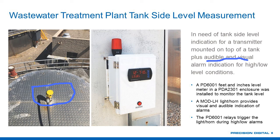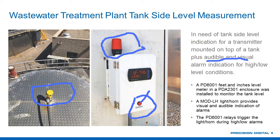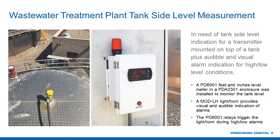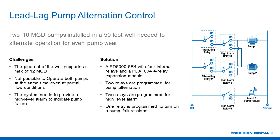We started selling these horn and light units a little over two years ago and they sold extremely well. We do provide a reset or silence button — so when that alarm goes off, if you want to reset the horn so it's not blaring at 85 decibels, you can go ahead and push the silence button. The light is usually set to either flash or stay steady until the alarm condition clears. Once again, we have a PD-6001 in feet and inches mounted into our PDA-2301 enclosure, and the horn and light are triggered by relays that are inside this ProView PD-6001.